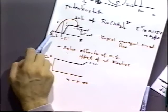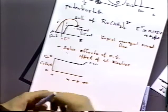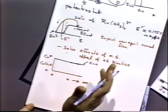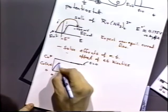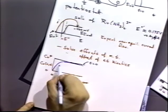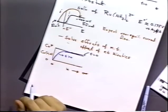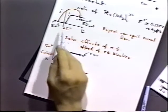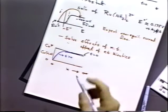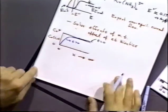Before we do the potential step, we're sitting at E_init, which is essentially a non-perturbing potential. However, as soon as the potential is stepped over to the plateau, the concentration in the vicinity of the electrode will be perturbed. At some time greater than zero, the concentration near the electrode surface will be close to zero, since we're well out on the plateau where all the reaction is occurring very rapidly.